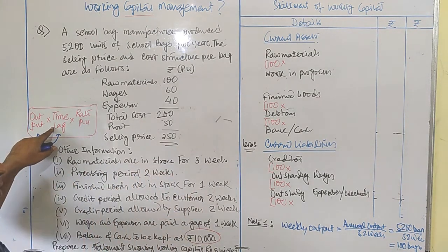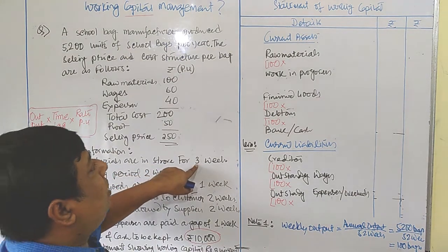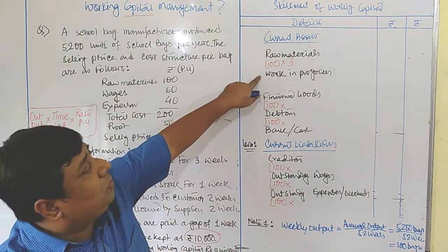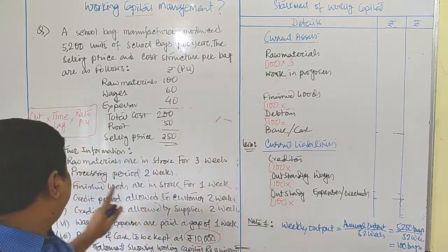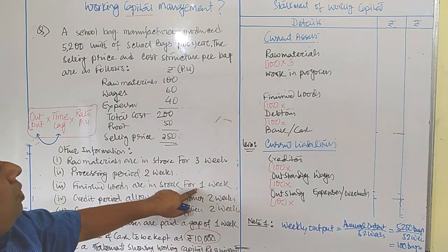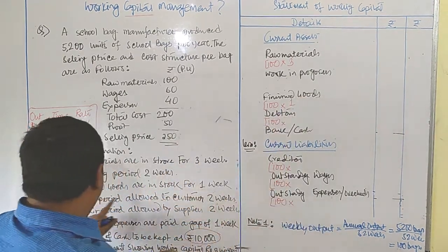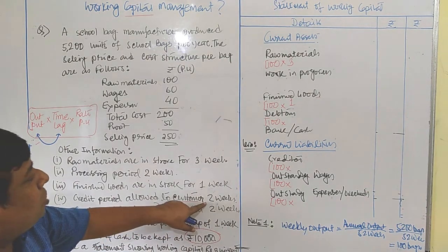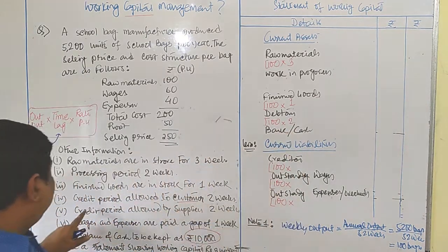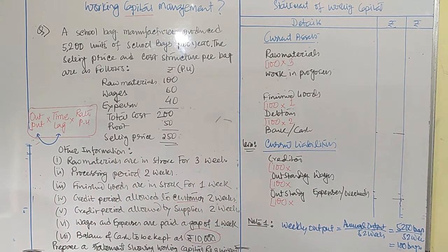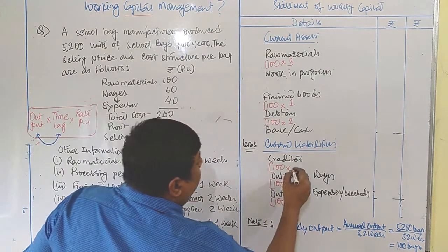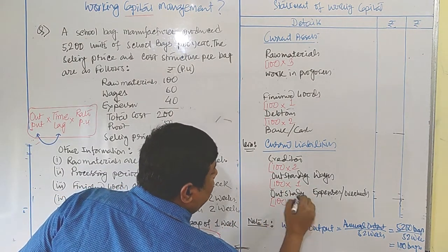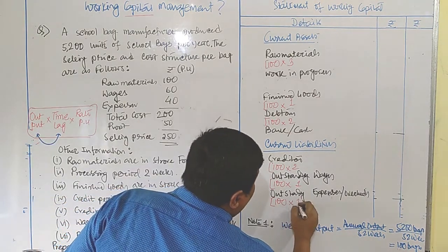Now plot the time lags one by one. Raw materials are in store for 3 weeks, so raw materials is multiplied by 3. Processing period is 2 weeks — work in progress will be handled later, so leave it blank for now. Finished goods are in stock for 1 week, so multiply by 1. Credit allowed to customers (debtors) is 2 weeks, so multiply by 2. Credit period allowed by suppliers (creditors) is 2 weeks, multiply by 2. Wages and expenses are each paid with a gap of 1 week, so both are multiplied by 1.